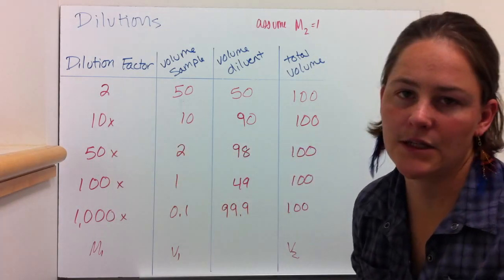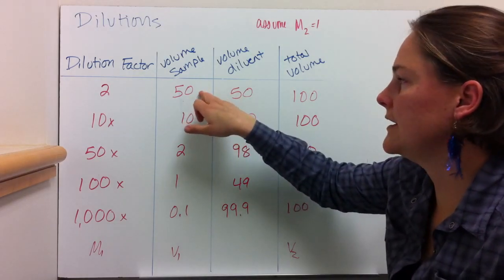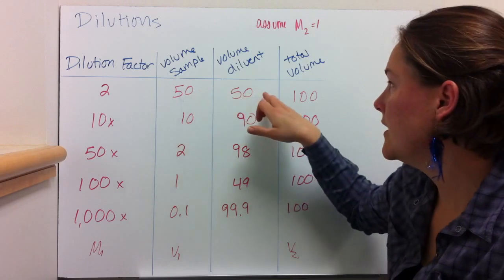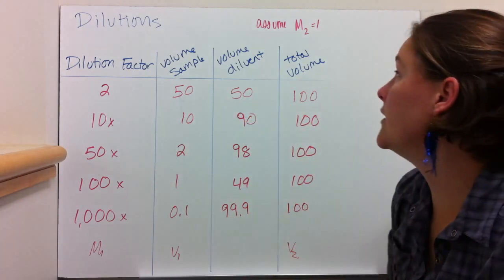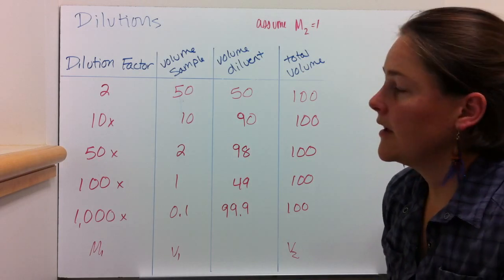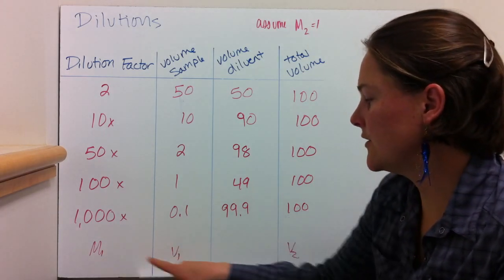So if you want a dilution factor like 2x where you have 50 milliliters of your sample and 50 milliliters of your diluent for a total volume of 100, you can calculate that by M1 is a dilution factor times V1 which is the sample volume.